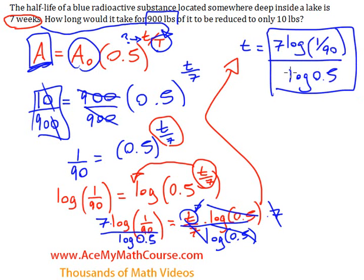Now I can plug this into the calculator. Seven log of 1 over 90, divided by the log of 0.5. We get 45.44.